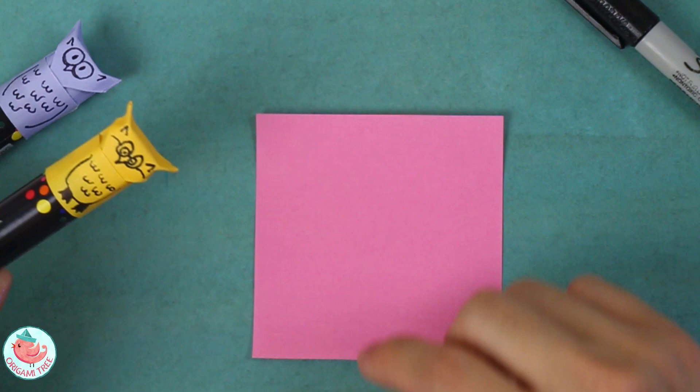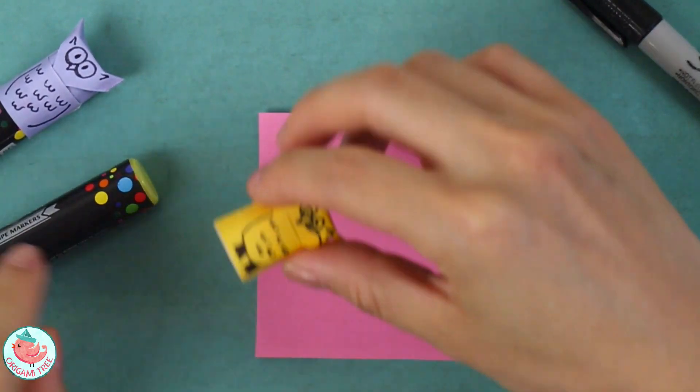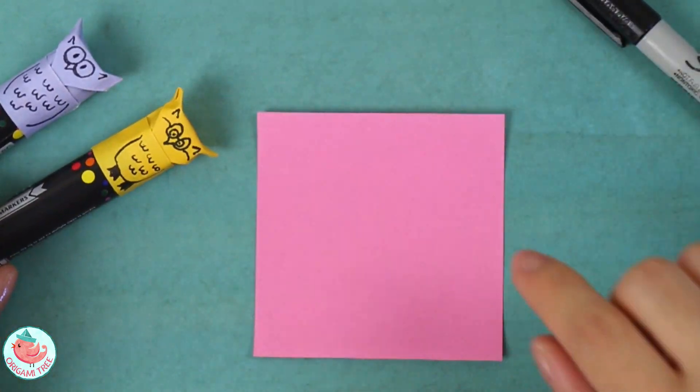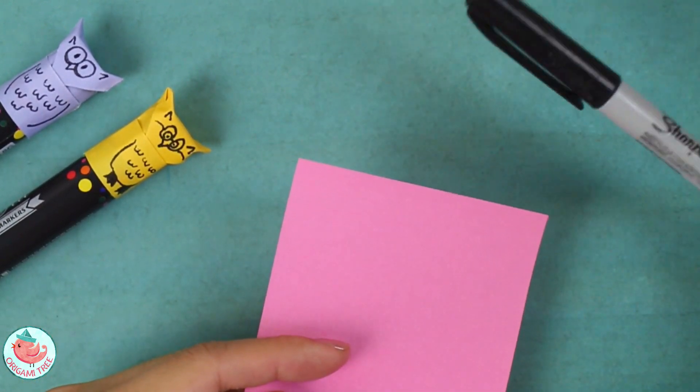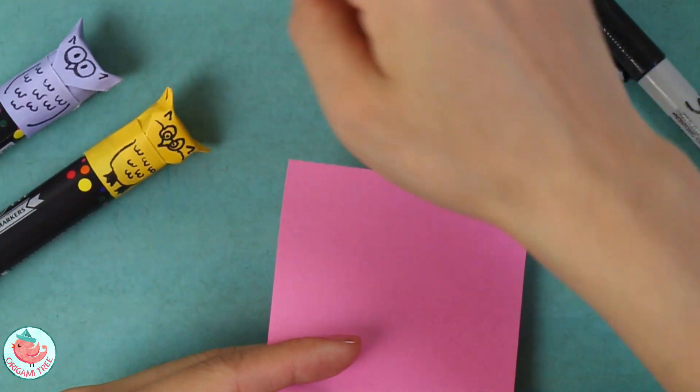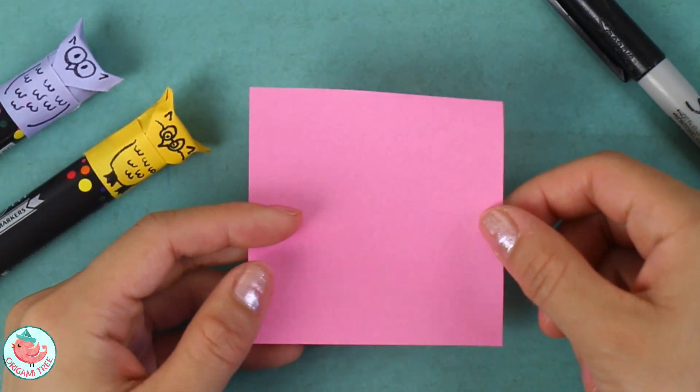To make the origami owl pen topper or finger puppet you're going to need a square sheet of paper, this is a three inch square, and you also need a marker or some type of writing utensil to decorate the features of the owl.